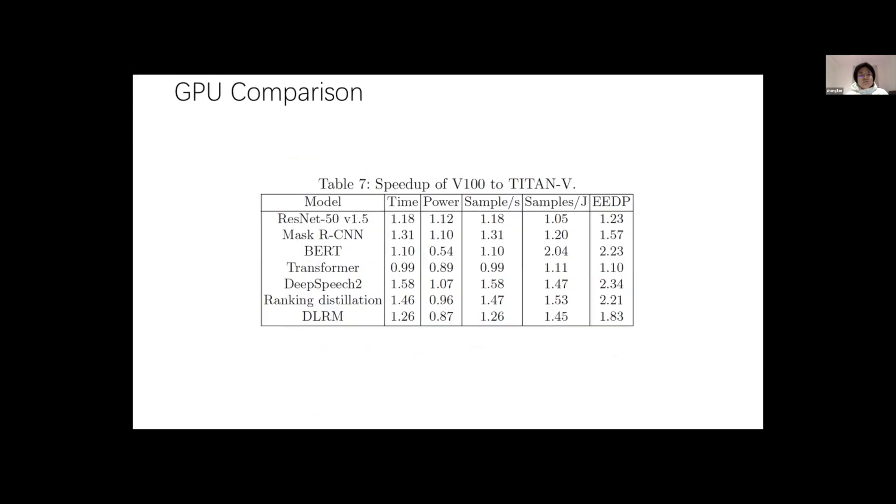Then we compare two GPUs. And the speed up of V100 to Titan V is listed in this table. And the bigger value, the better. We can see that EEDP of V100 is better than Titan V for all seven models. And EEDP is a comprehensive metric that considers power and time at the same time.